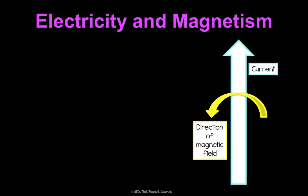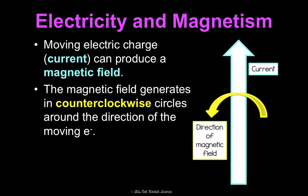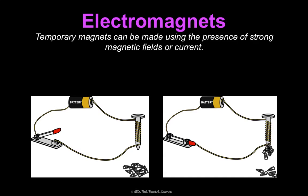So, how does this relate to electricity? Why are these even in the same unit? So moving electric charge, which we know to be current, can actually produce a magnetic field, which is pretty cool. And the way that works is the magnetic field is generated counterclockwise around the direction of the moving electrons. So in my picture, if the current is moving this way, the magnetic field is generated counterclockwise around that current. The stronger the current, the stronger the magnetic field that can be produced.